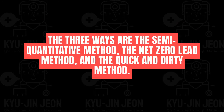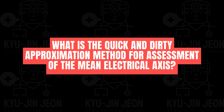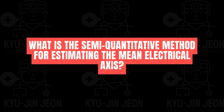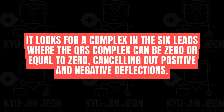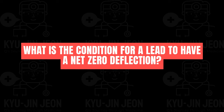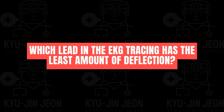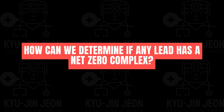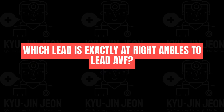There are three ways to determine the mean electrical axis: the semi-quantitative method (calculating the net direction of QRS complexes of the six limb leads), the net zero lead method (finding a lead where the QRS complex nets to zero), and the quick and dirty method (using leads 1 and AVF). The net zero method looks for a lead where positive and negative deflections cancel out; if lead AVF approximates net zero, then lead 1 — which is at right angles to AVF — indicates the axis direction.